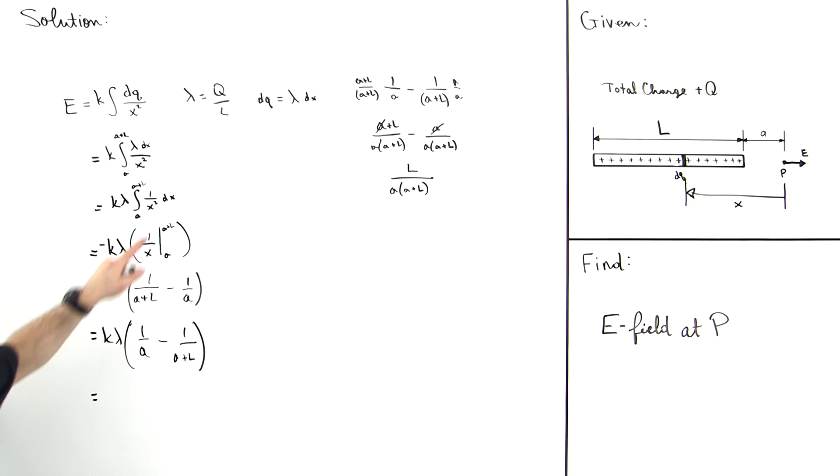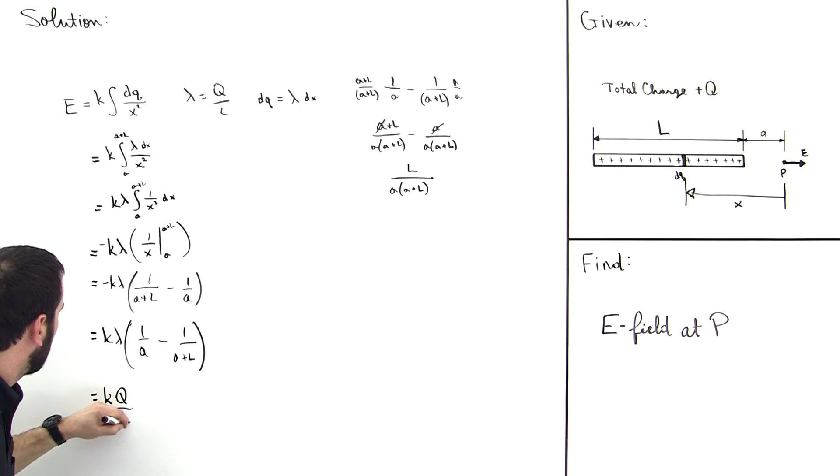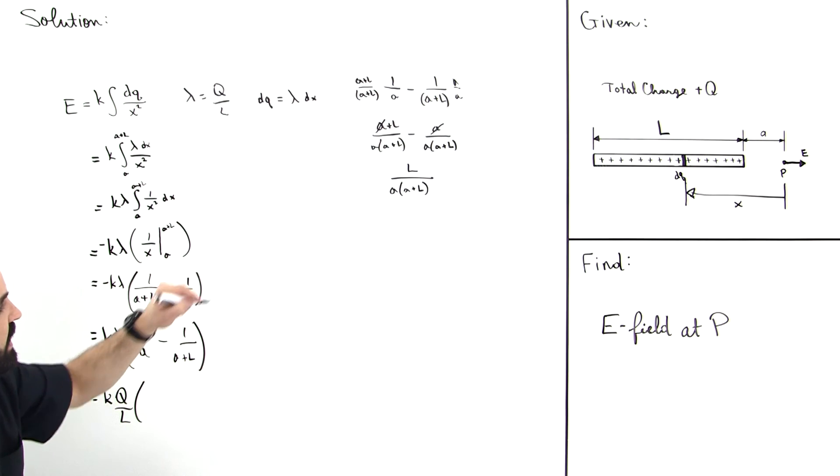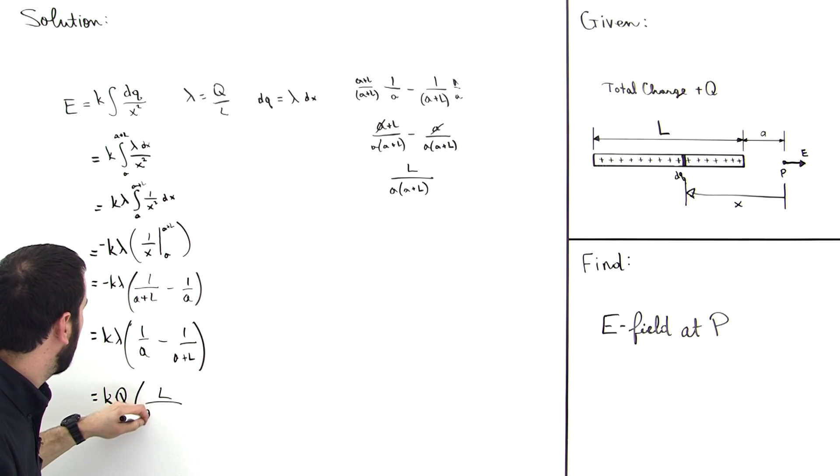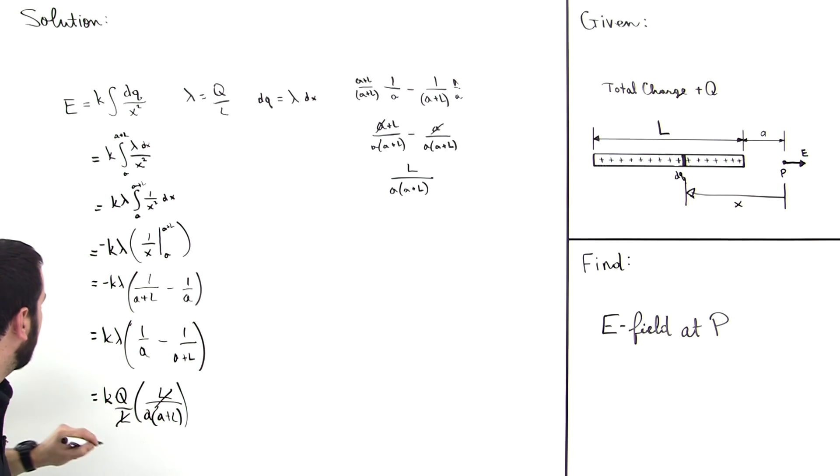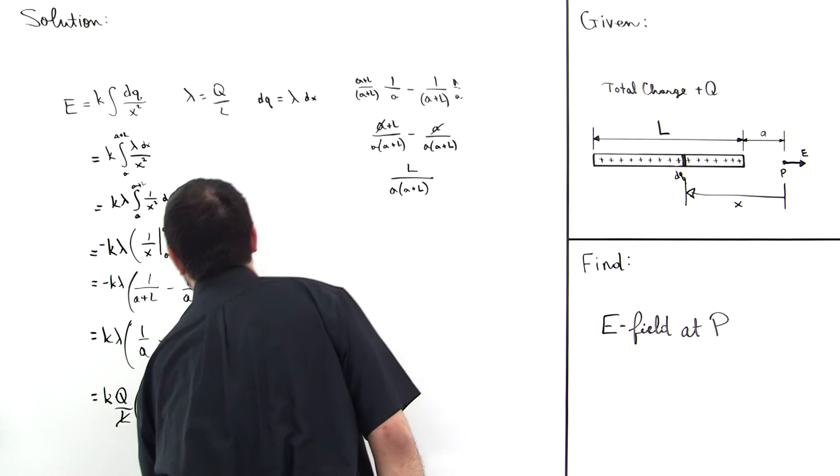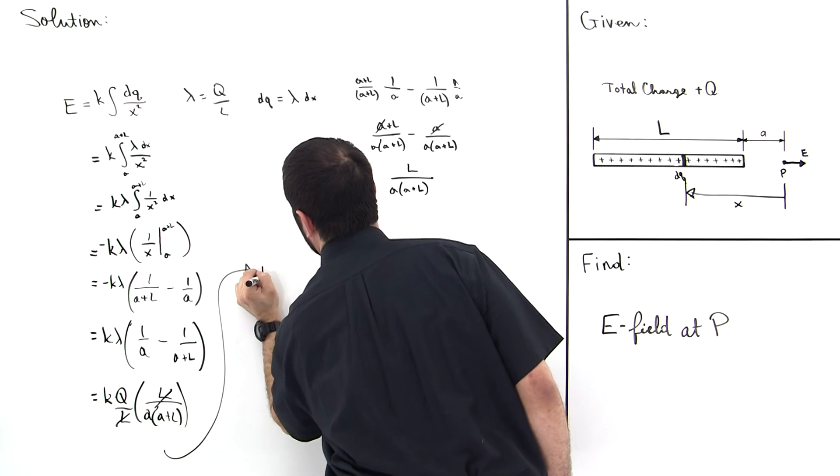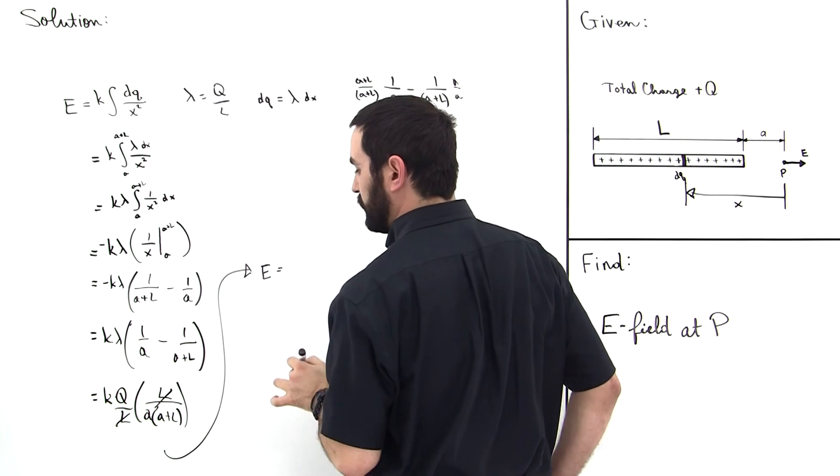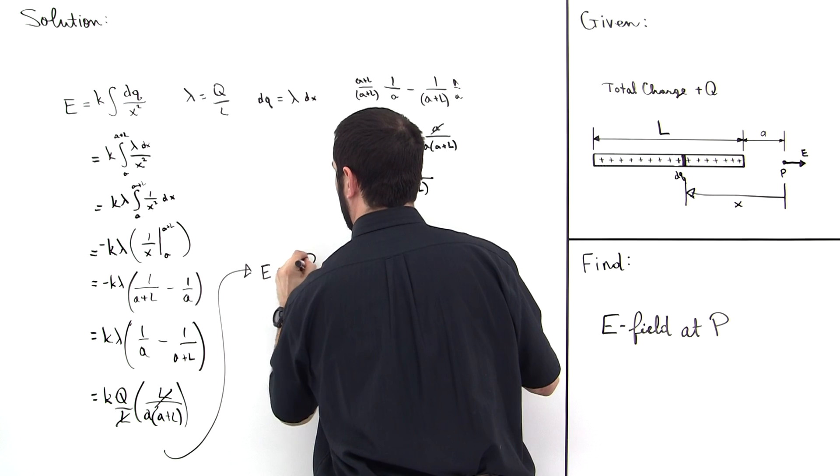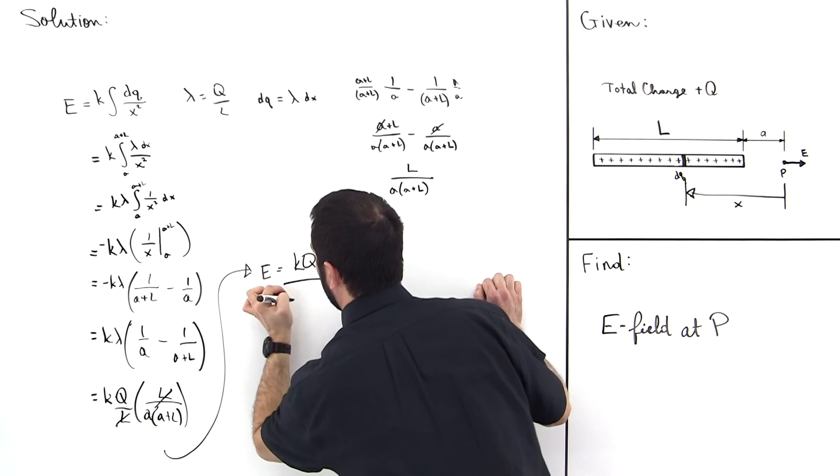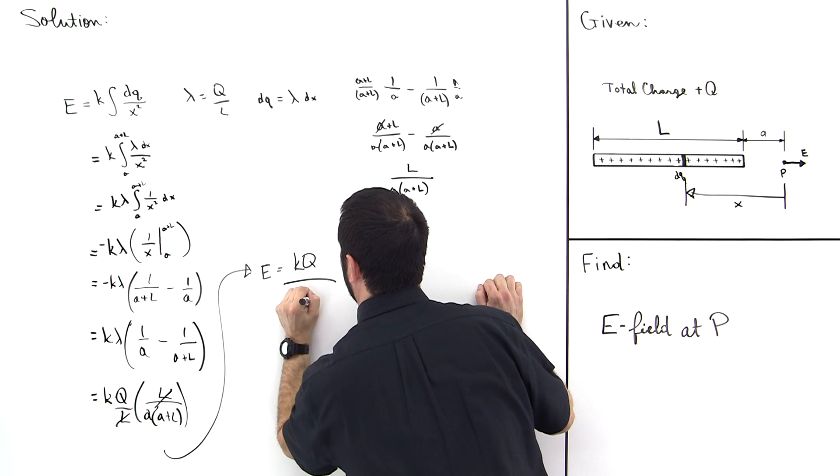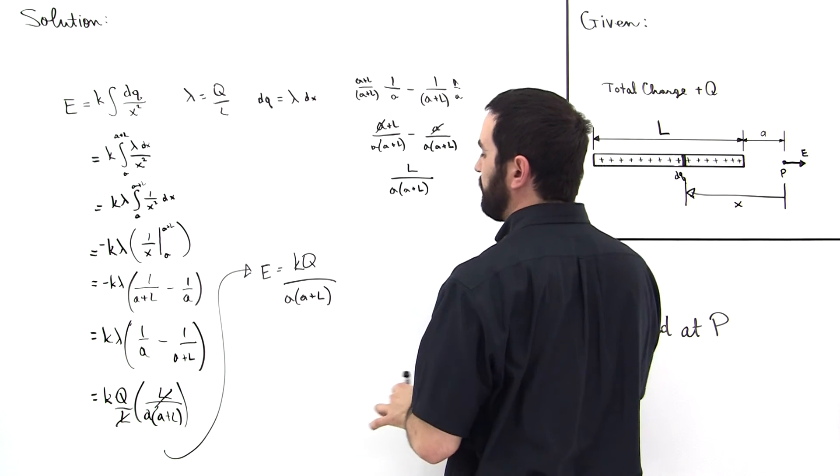But Lambda is equal to Q over L. So let's make that substitution back in there. Lambda is equal to Q over L, and then multiply it times L over A times A plus L. See the L is canceling like this. So we'll just write our answer right here. The electric field is equal to KQ divided by A times A plus L, like this.